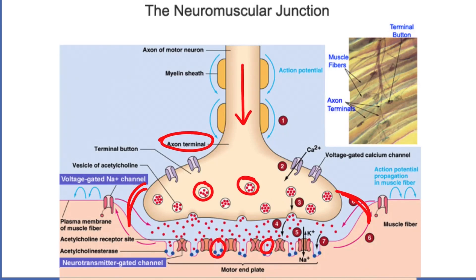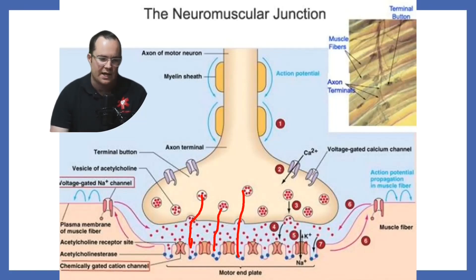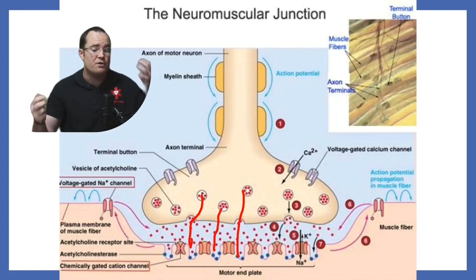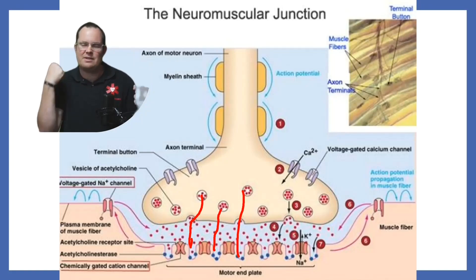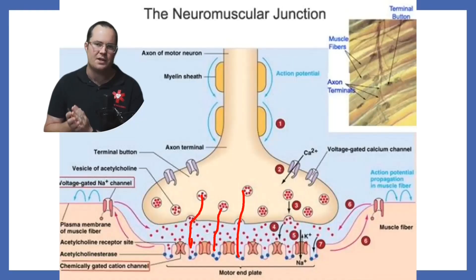The acetylcholine finds itself a receptor site — you can see several of them down here. When acetylcholine finds a spot at the receptor site, it causes an action. For example, right now I'm able to move because acetylcholine is going into my muscle and causing an action. We call that action depolarization — depolarization equals an action.